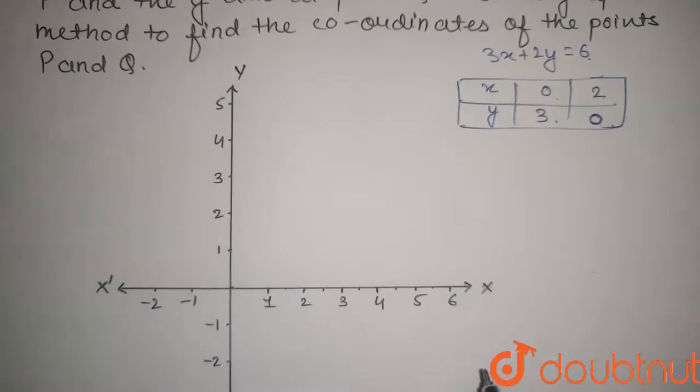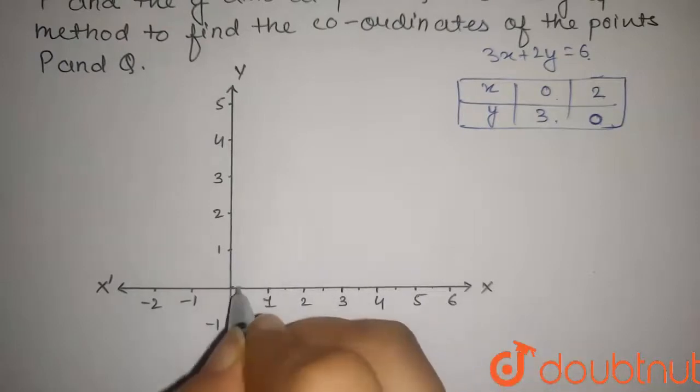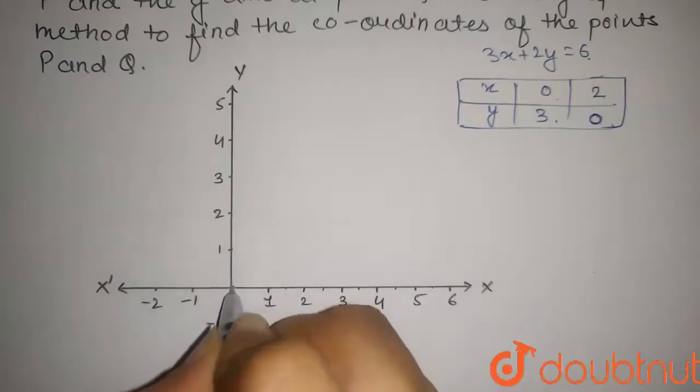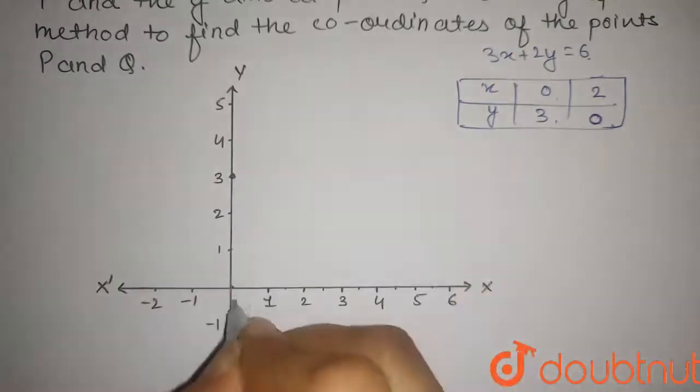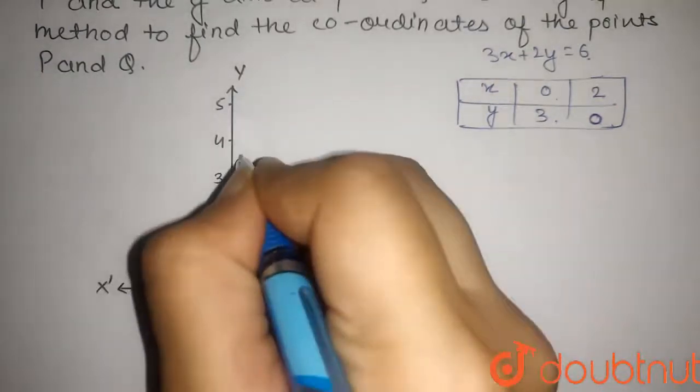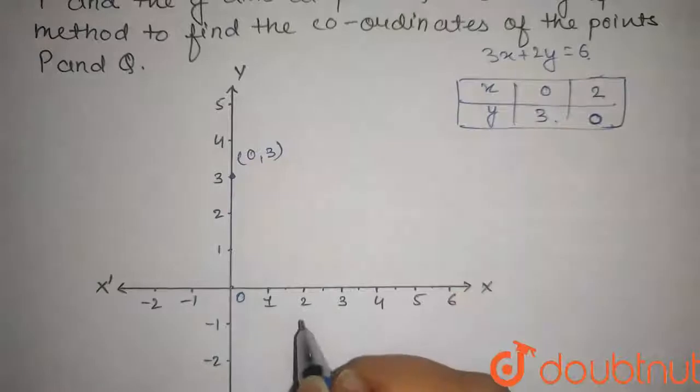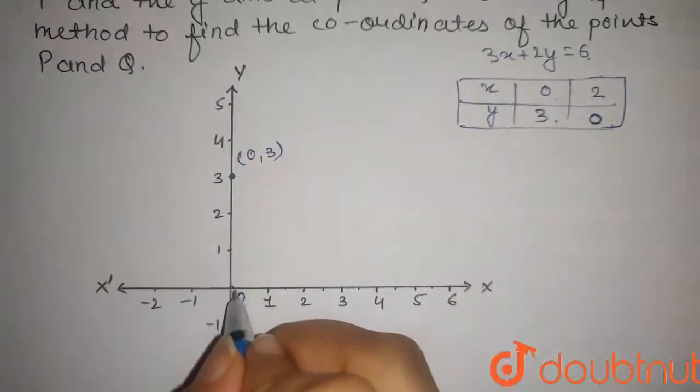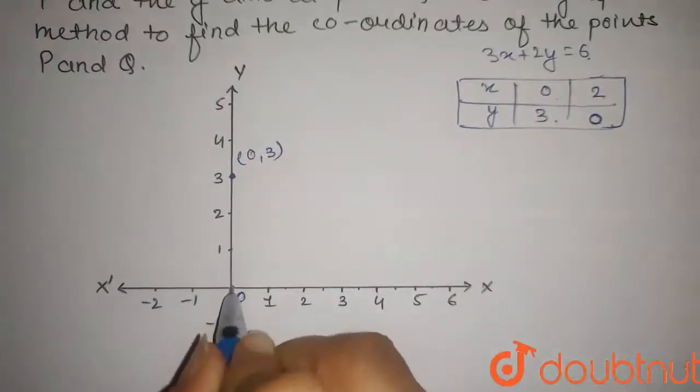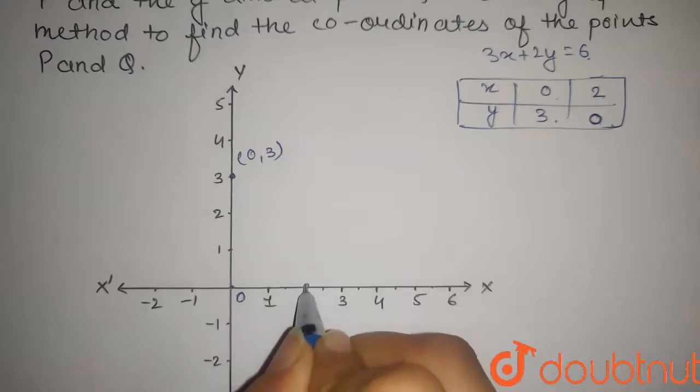Now we'll plot these points on the graph. When x = 0, y = 3, so this point will be here. This is the origin, so this point will be here: (0, 3). And if y = 0, then x = 2, so this point will be here: